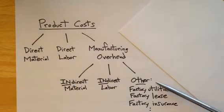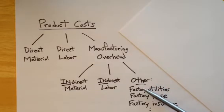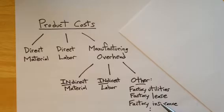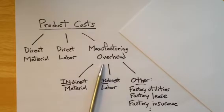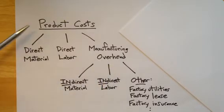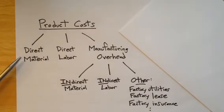Finally, we have all of the other costs in the factory — the utilities, the lease on the factory, and the insurance for our factory operation. All of this is included under manufacturing overhead, which is included under product costs along with direct material and direct labor. This covers the factory side of the operation.